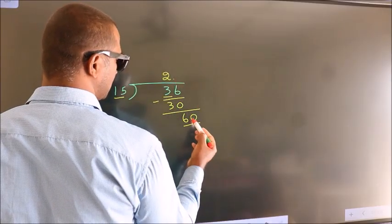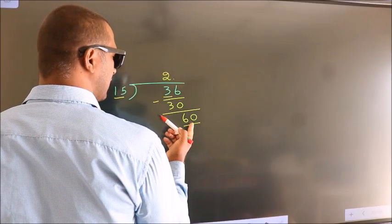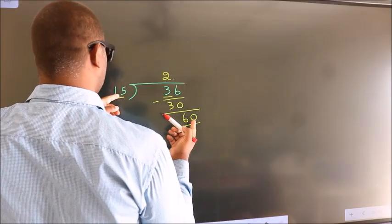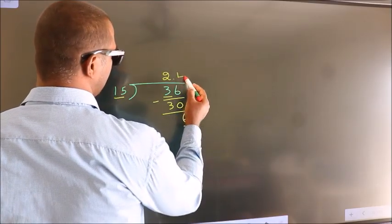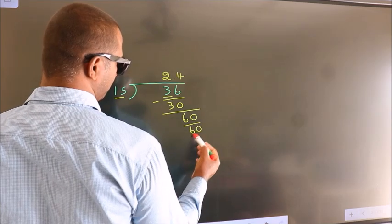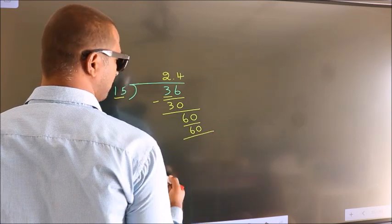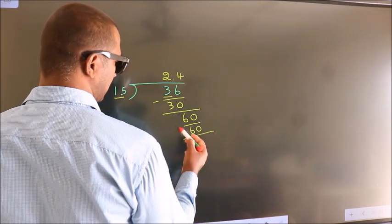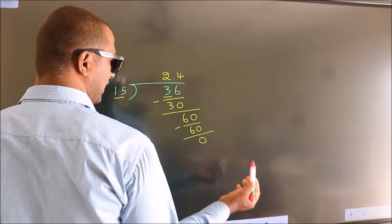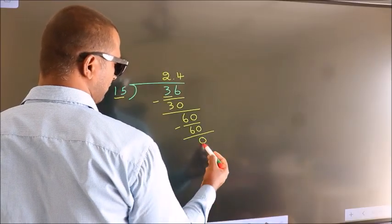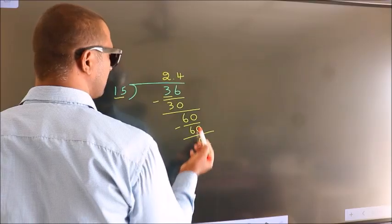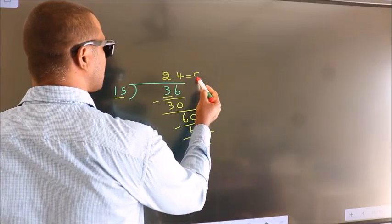So we have 60. When do we get 60 in the 15 times table? 15 times 4 is 60. Now we subtract and we get 0. Here we got remainder 0, so this is our quotient.